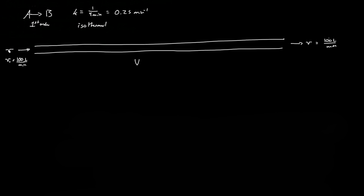Let's graph this to see what it looks like for a first-order reaction in a plug-flow reactor. At volume zero, once the feed enters the system, no reaction has occurred, so the concentration is CA₀. We want 90% of A consumed, meaning we want the concentration to drop to 0.1·CA₀ — only 10% of what we initially had.